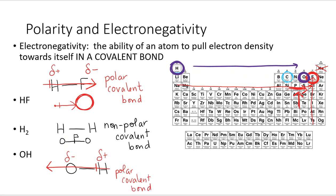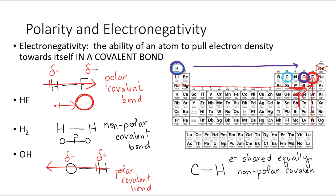One more exception I want to talk about is carbon and hydrogen. On the periodic table they look like they should be different, and it looks like carbon should have more electronegativity than hydrogen, but it does not. In practice, there's really no electronegativity difference between carbon and hydrogen — the electrons are shared equally. That means it is a nonpolar covalent bond. It's really important to note when a bond is polar or nonpolar.